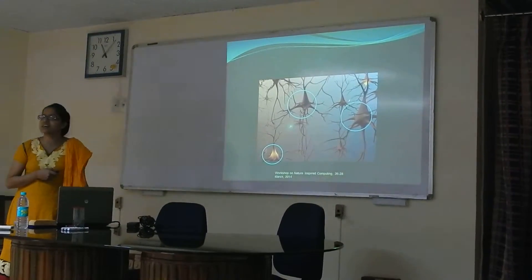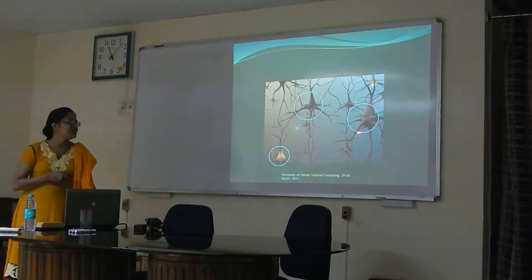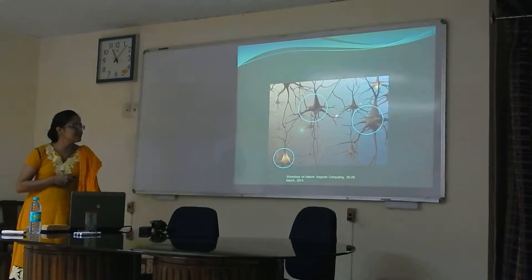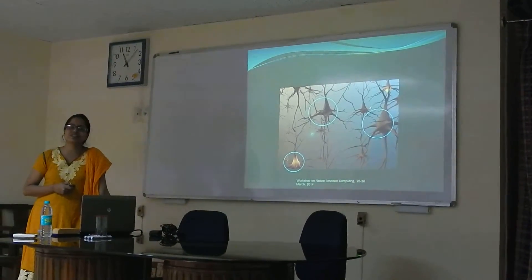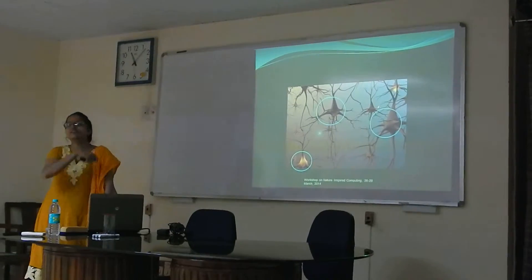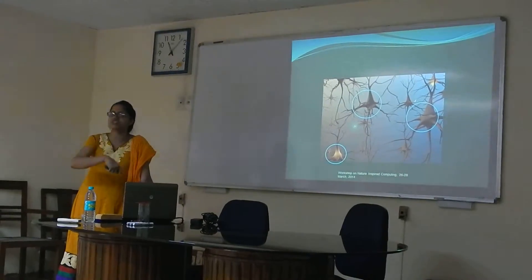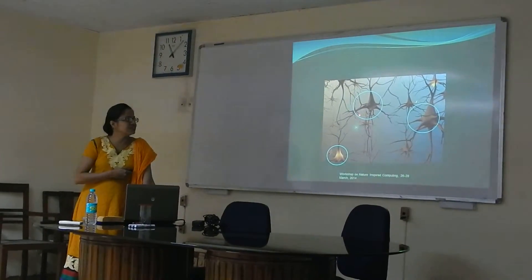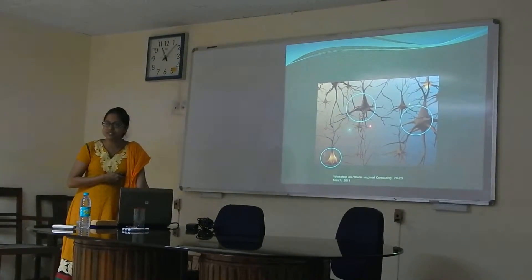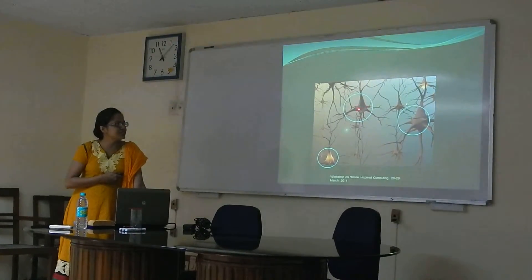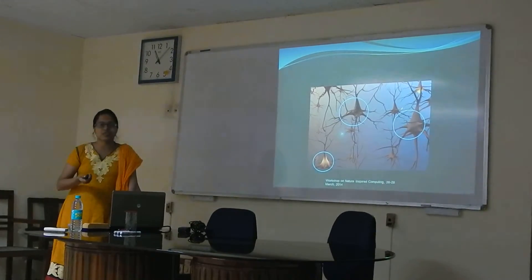Each neuron has three parts: the main cell body, the dendrons, and the axons. The dendrons divide further into dendrites. What is the main purpose of dendrites? They are the receiving end of neurons — they take information or signals from a previous neuron or some other part of the body. That signal gets processed in the cell body, and the processed signal travels through the axon to some other neuron or portion of the body.